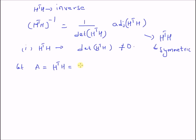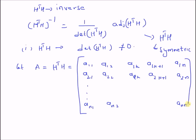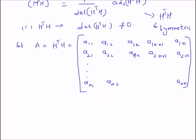Let us enumerate the elements of matrix A as follows: A_{11} is the element in the first row and first column, A_{12} in the first row and second column, and so on up to A_{1K} and A_{1,K+1} through A_{1N}, and similarly for subsequent rows A_{21}, A_{22}, ..., A_{2K}, A_{2,K+1}, A_{2N}, and finally in the last row AN1, AN2, up to ANN. This means H^T H has N rows and N columns — it is a square symmetric matrix.